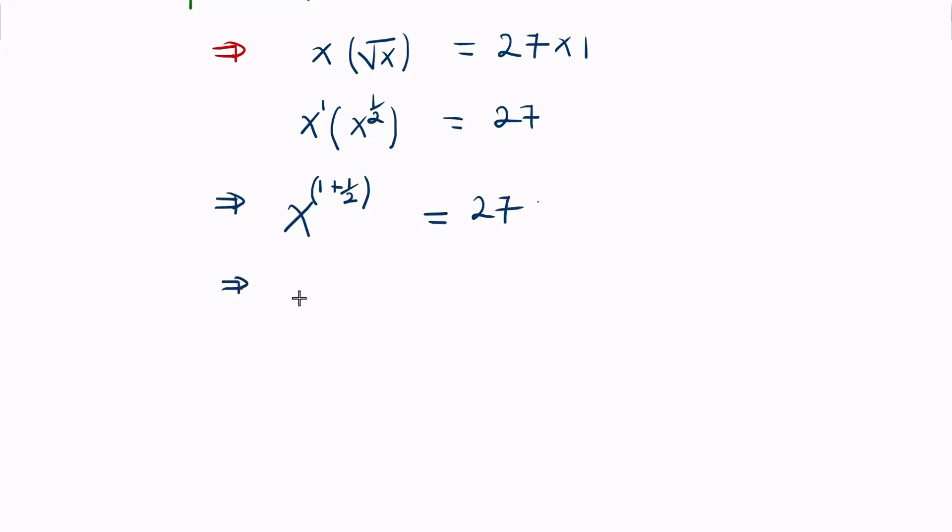As we simplify, the LCM is 2. Then 2 divided by 1 is 2, multiplied by 2. We have 2 plus 2 divided by 2 is 1, multiplied by 1 is 1, equaling 27.